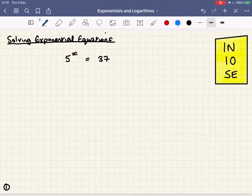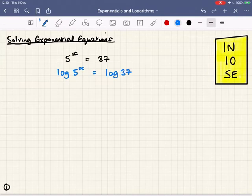The way we do that is when we get an expression like 5 to the x equals 37, we take logs of both sides. Remember when you've got an equation with an equal sign, if you do the same thing to both sides it stays in balance. So if I take the log of both sides, log of 5 to the power of x equals log of 37, they're still equal.